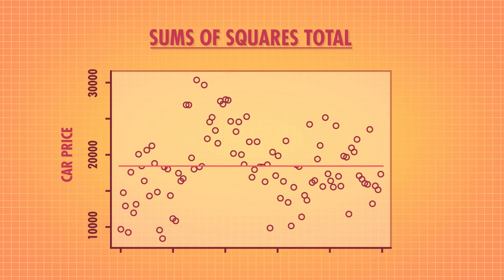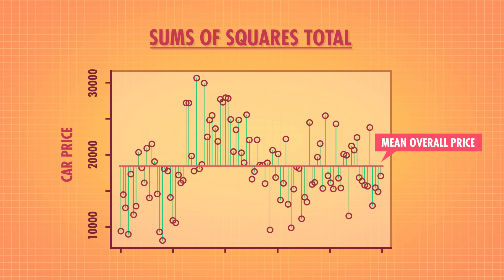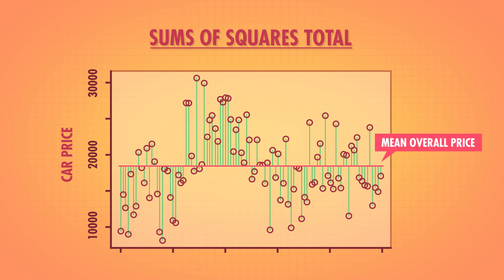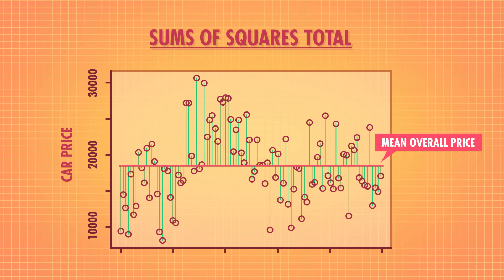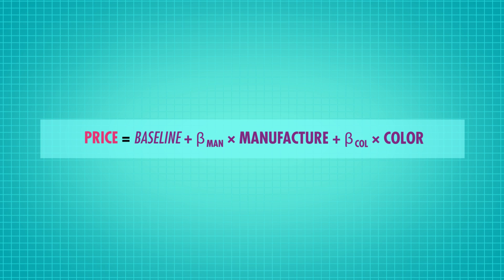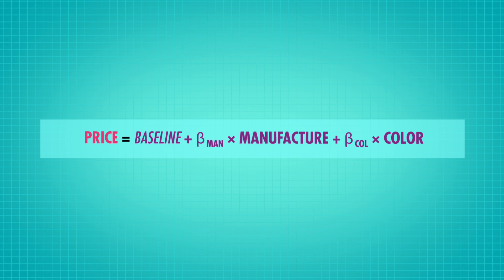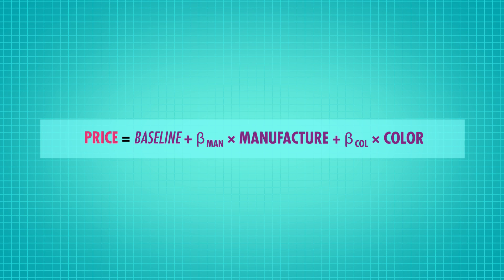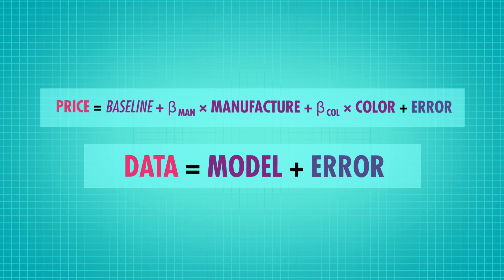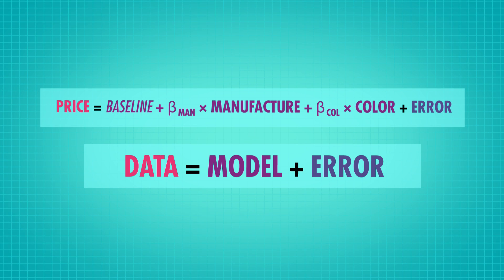We do this by summing up all the squared distances between each car price and the mean overall car price. Then, once we know the total variation in the dataset, we set out to use manufacturer and color to explain why these sedans have different prices. Our proposed model tells us that the price of a car is some baseline cost, plus an adjustment for who made the car and for what color it is. We add an error term, which represents how off our guess was from the actual price of each car.